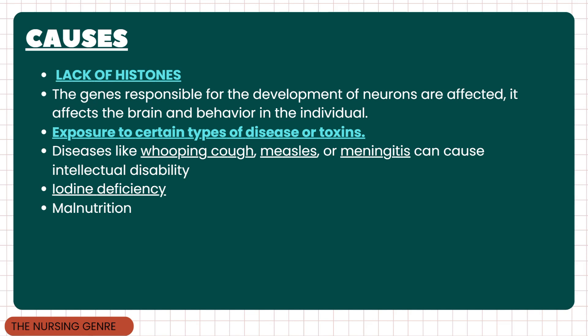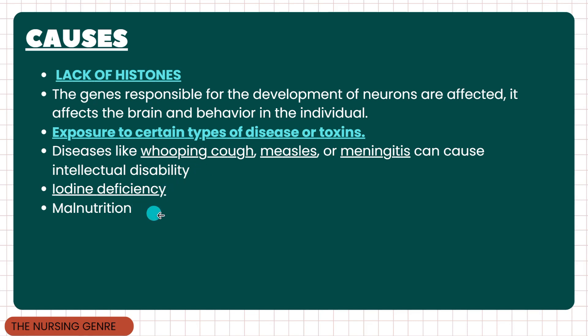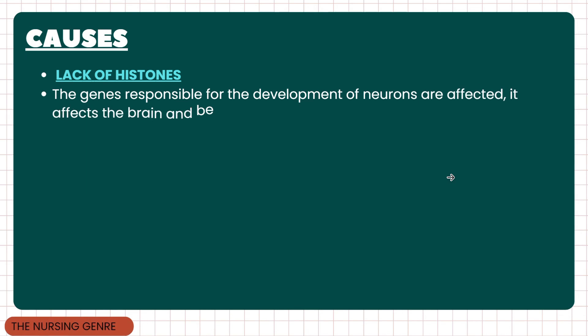Exposure to certain types of diseases or toxins is another cause. For example, whooping cough, measles, and meningitis can cause intellectual disability. There is also a chance from iodine deficiency and malnutrition contributing to mental retardation.